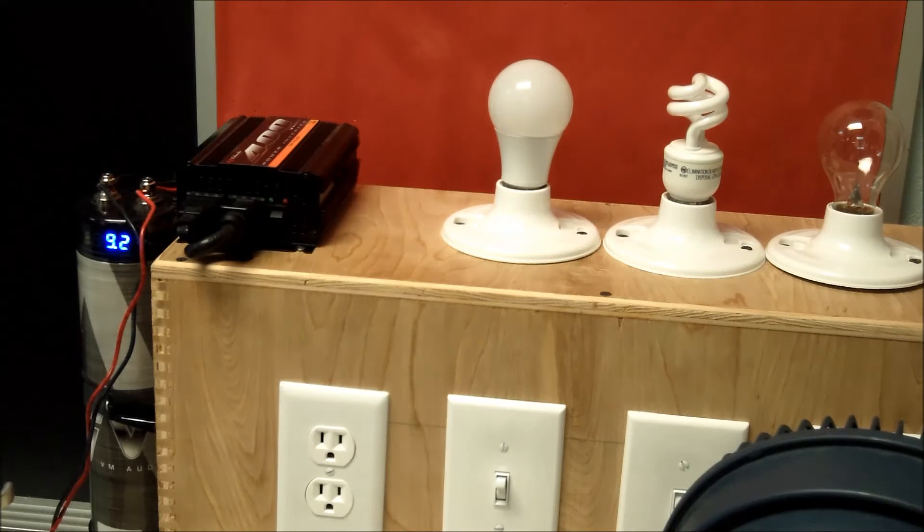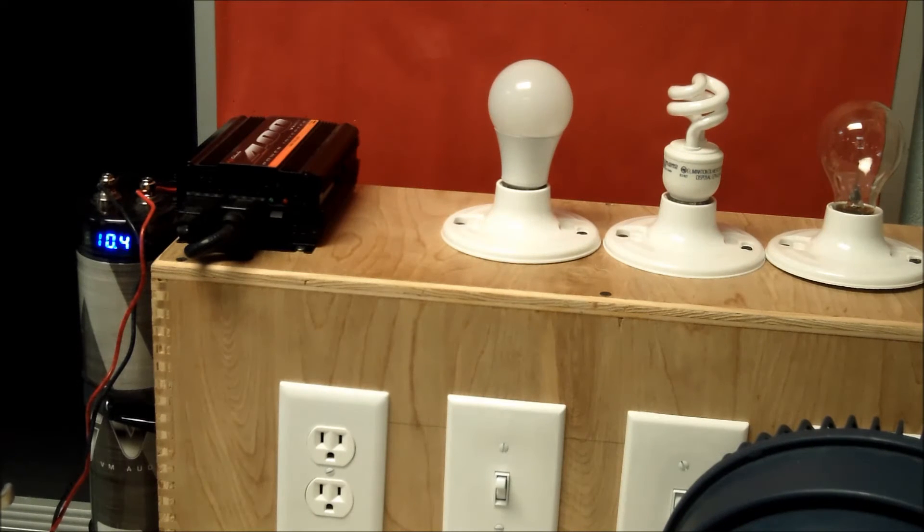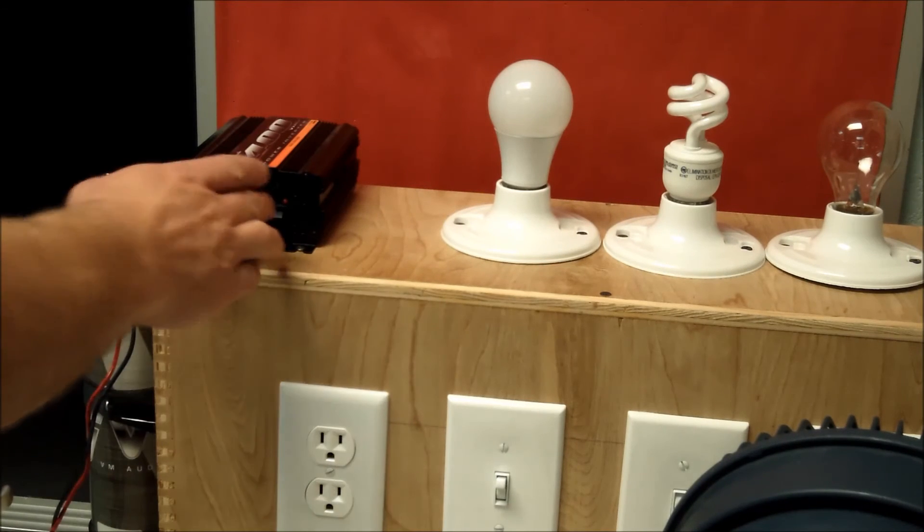You notice there's some blue lights coming on there and now I'm generating around 11 volts DC. The inverter will take the DC and change it to alternating current, which is necessary to get the lights to operate. So as long as I have this a little above 12 volts, it should be okay to turn the inverter on.